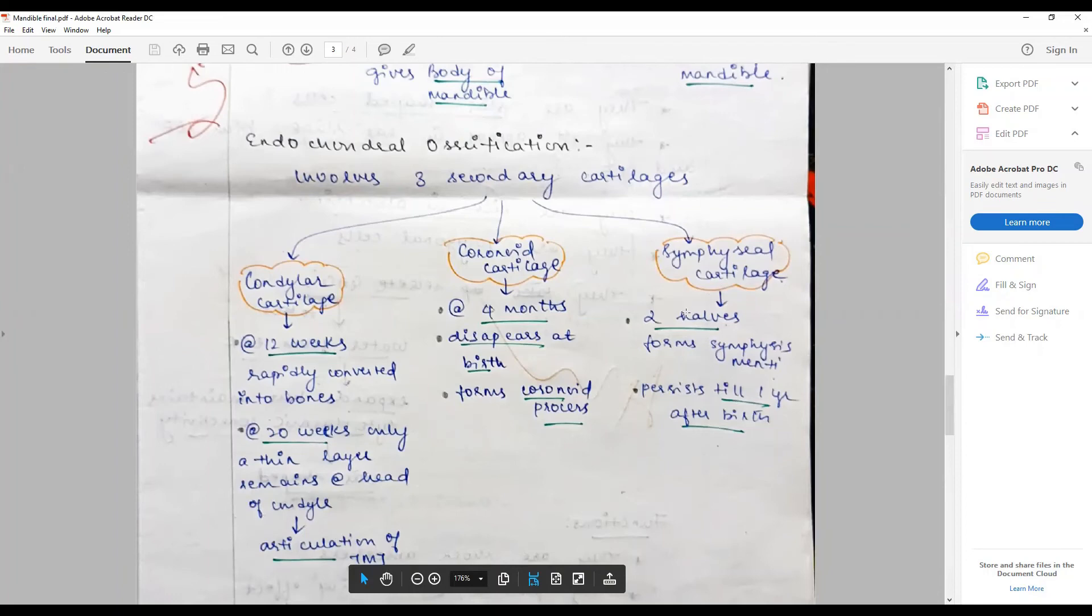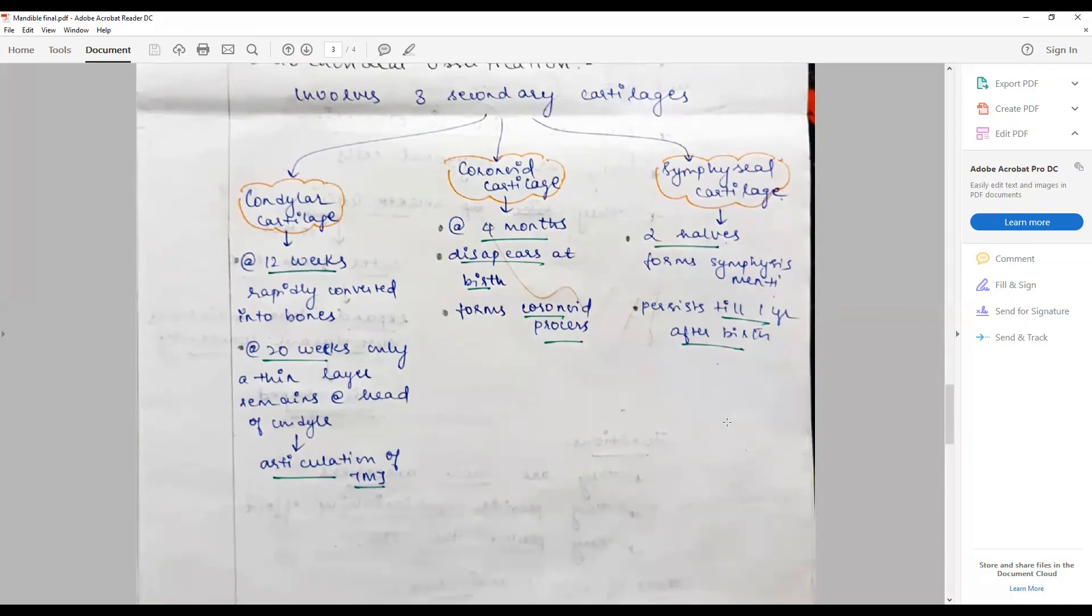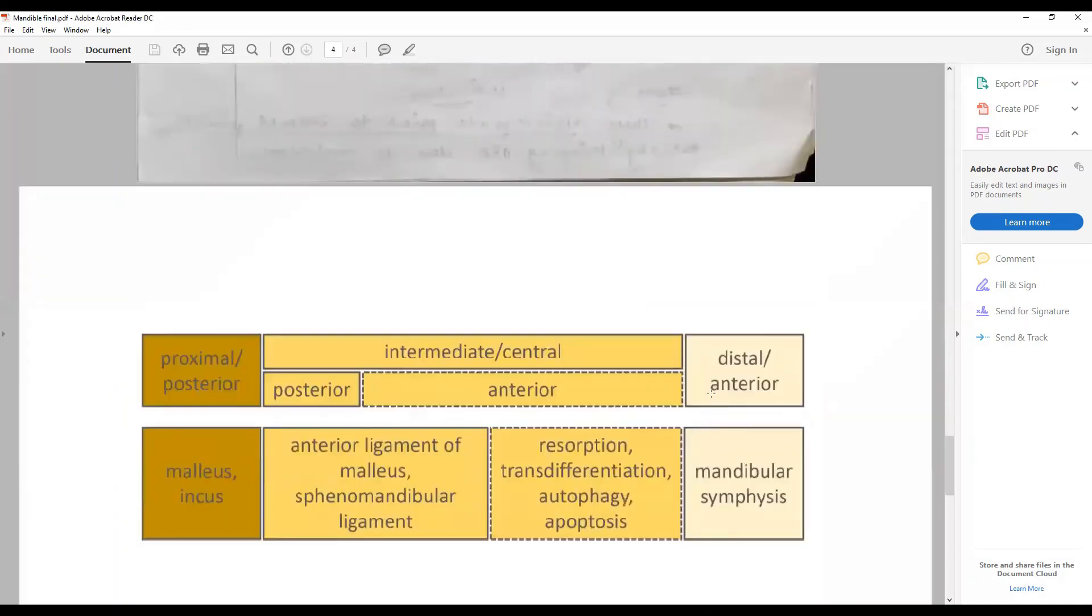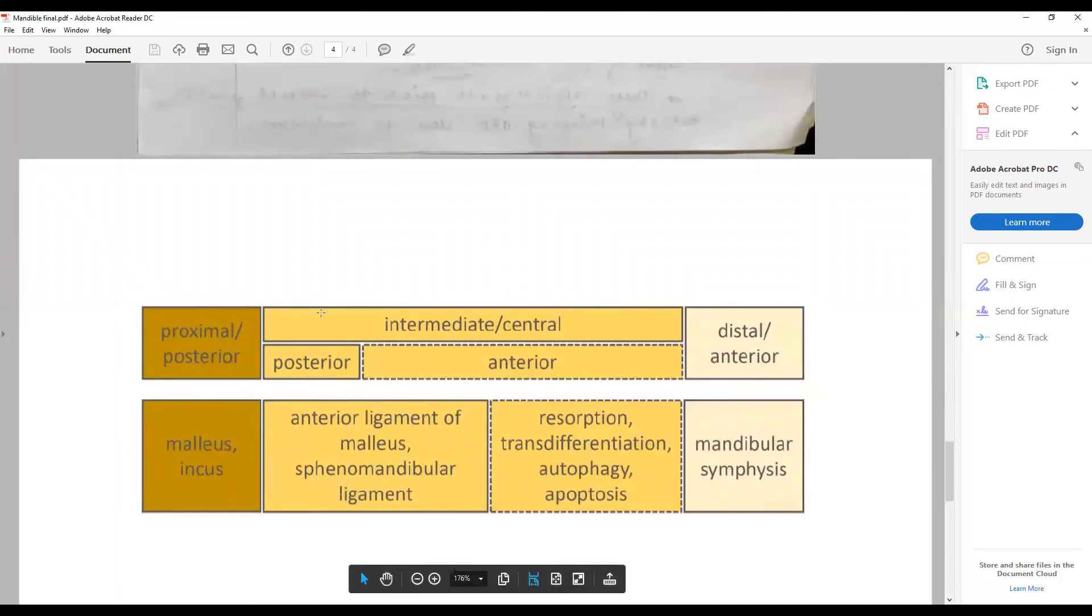The symphysial cartilage contributes to the two halves of the symphysis menti, fusing near to the midline. That persists till up to one year of birth, after which it fuses. This diagram shows the role of the Meckel's cartilage.